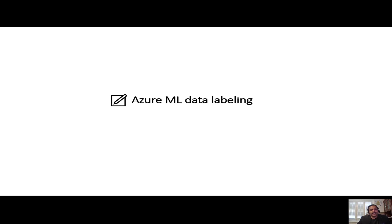Talking about data labeling, this is an important step before you can train an ML model for computer images. You have images and you need to specify the expected output, whether you are looking to classify the images or you are looking for objects in images.